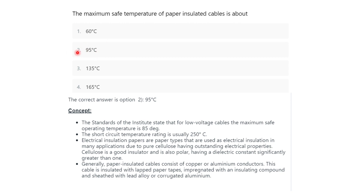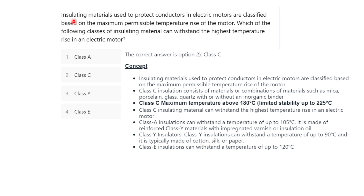The next question: insulating materials used to protect conductors in electric motors are classified based on the maximum permissible temperature rise. Which of the following classes of insulating materials can withstand the highest temperature rise in electric motors? Options are: class A, class C, class Y, and class E. The correct option is class C.